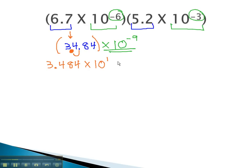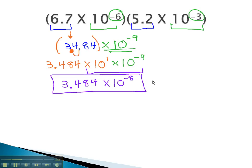We still have the times 10 to the negative 9 as we have not touched that yet. We now will use our exponent properties to combine the tens together by adding the exponents. This gives us 3.484 times 10. 1 plus negative 9 is negative 8, and this becomes our final solution.